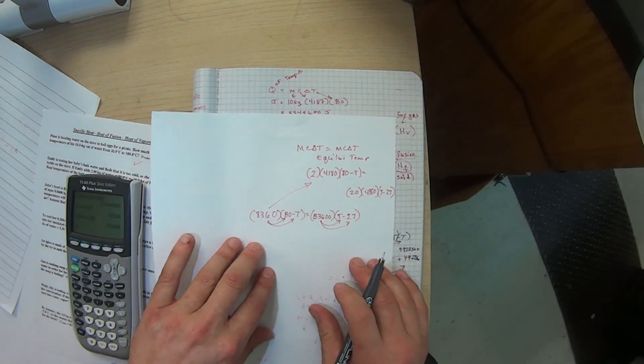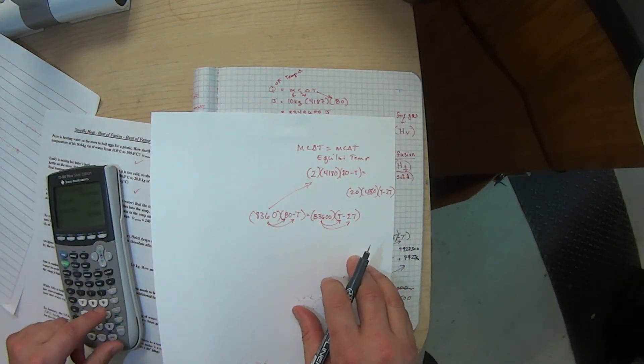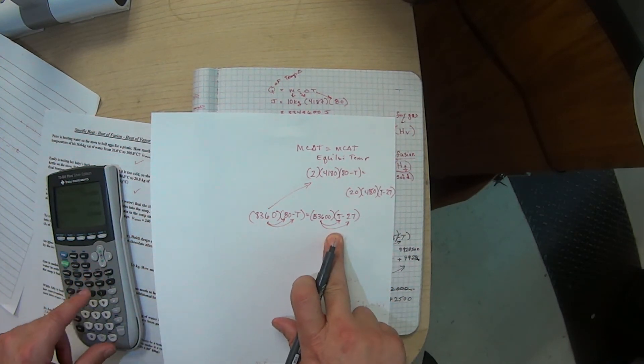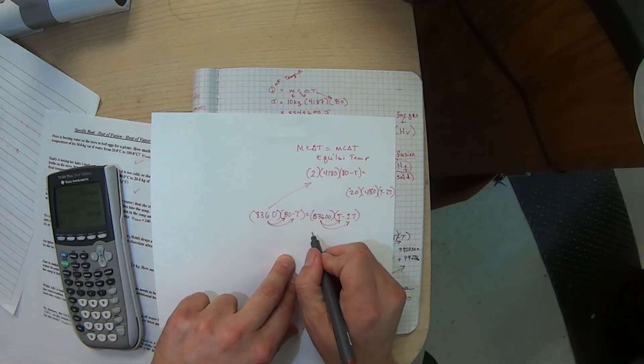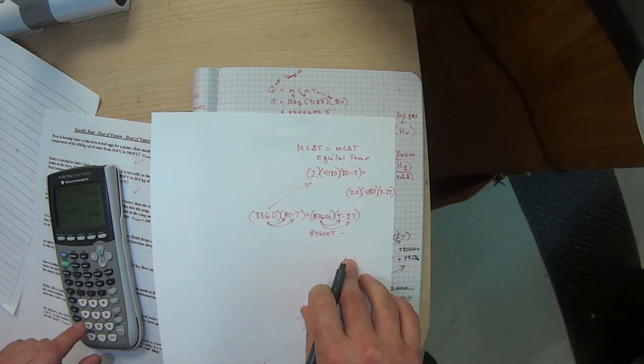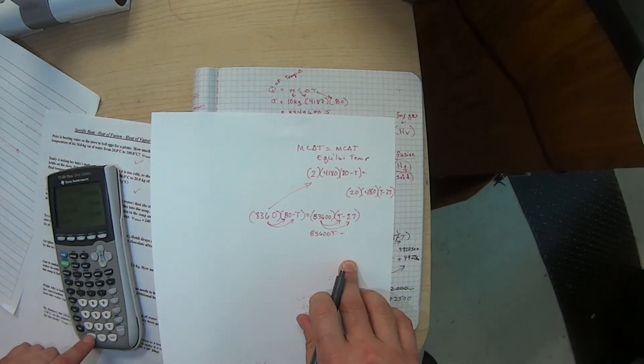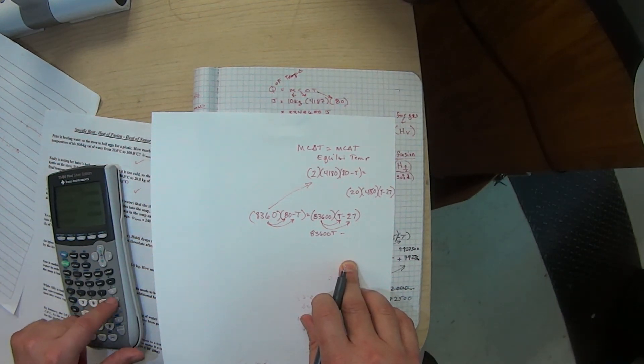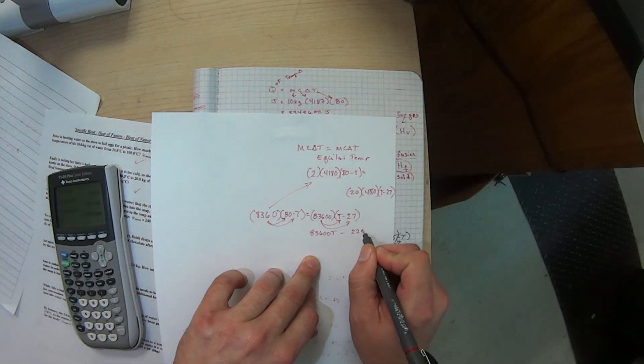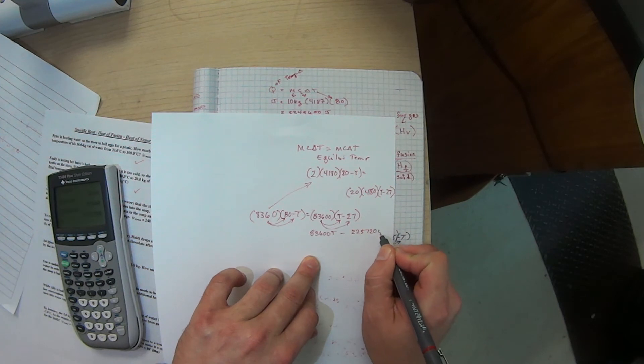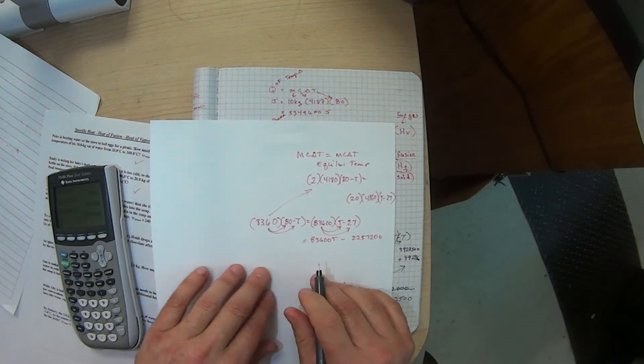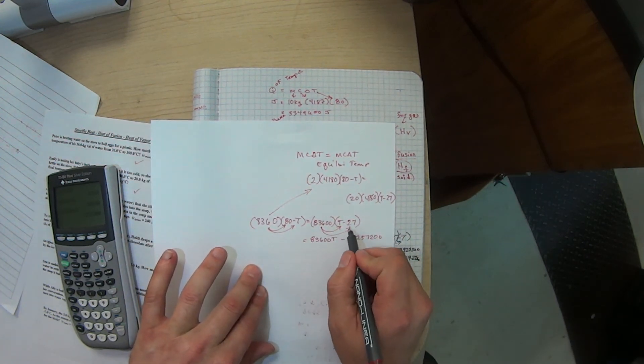A lot of kids have trouble with this part where we're going to distribute. We take those numbers and we distribute them out. When we clean it up, it looks something like this: the 8360, I'll work first of course, that's going to be T minus 2,257,200. That's this side is equal to, and make sure that you have the signs right.